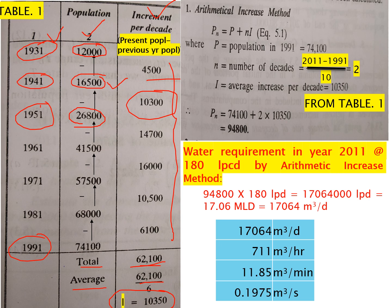So now we apply the formula: Pn = existing population + n × i. Everything is known to us. Population jo last humko pata hai woh 1991 ka population hai — 74,100. Then n is number of decades: humara population 2011 mein find karna hai, 1991 humara last year hai, (2011 − 1991) / 10 = 2, so n = 2. And i is average increase per decade, which we obtained as 10,350.